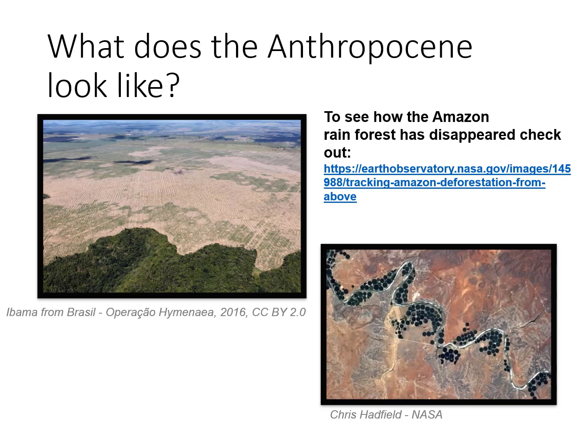The next image was taken by Canadian astronaut Chris Hadfield and shows circular irrigation and farming along a river in a dry part of South Africa. River systems around the world have been altered to provide water for irrigation, changing the spatial distribution of water around the world.